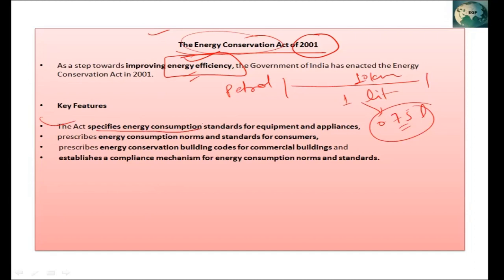This Act specifies the standard of energy consumption for equipment and appliances. In any industry, there are many electrical equipment, and the Act defines how much energy they can consume — how much electricity they are allowed to use.